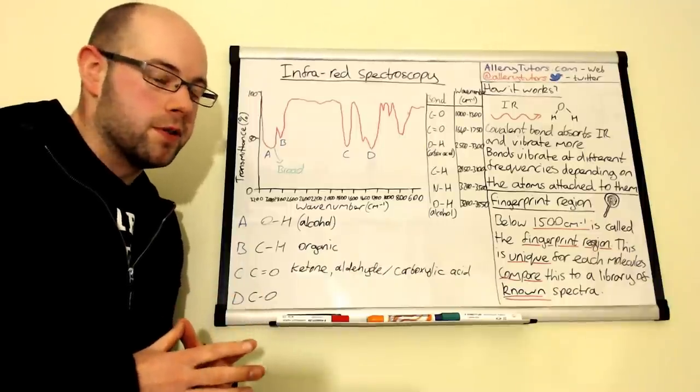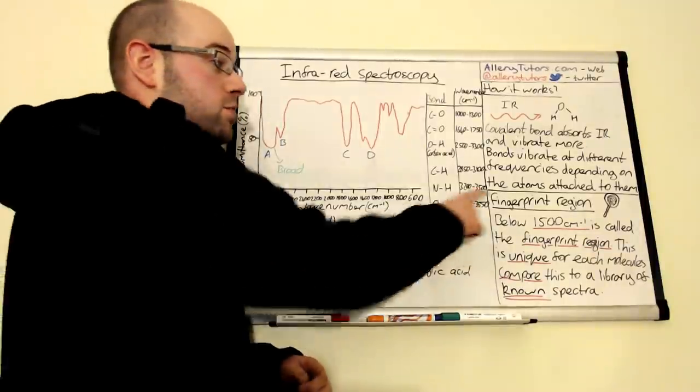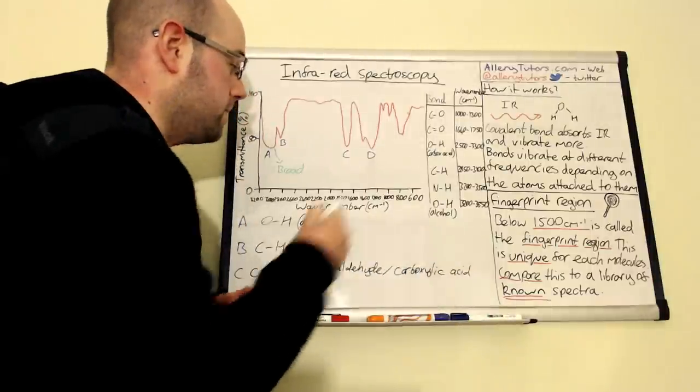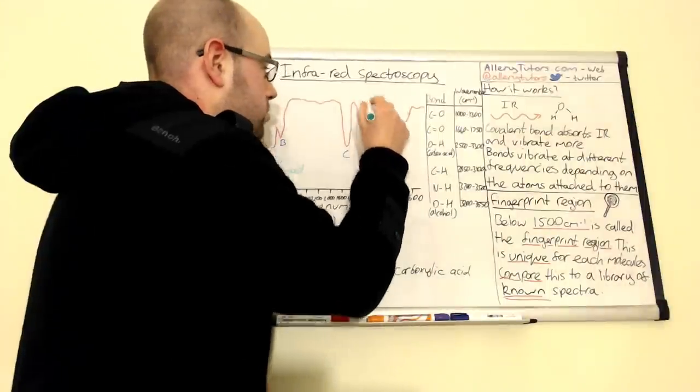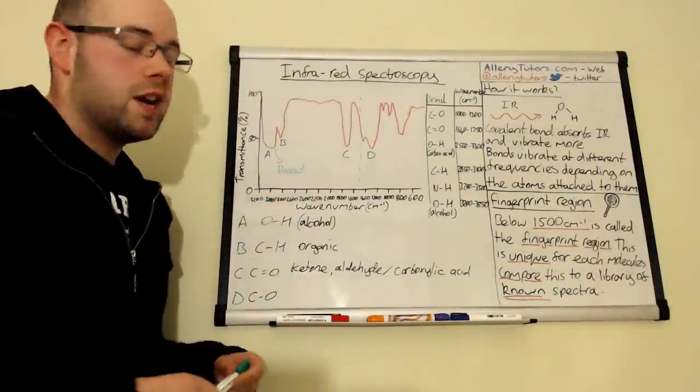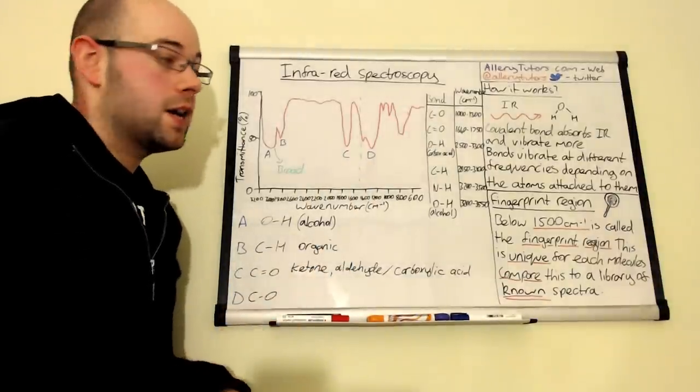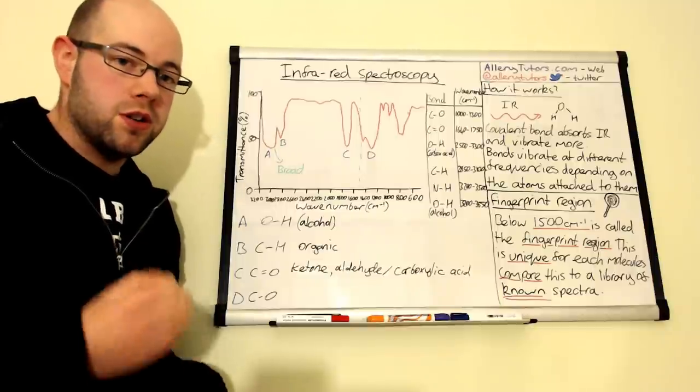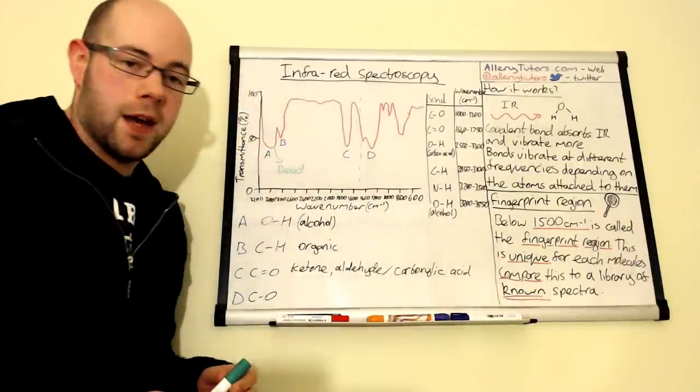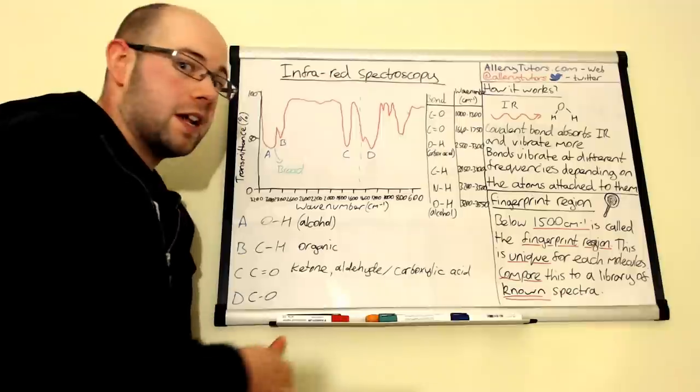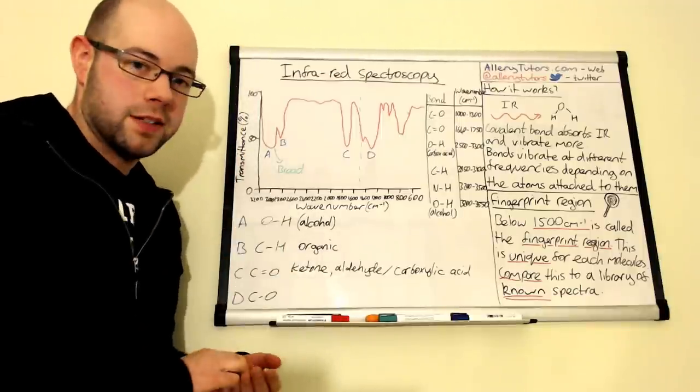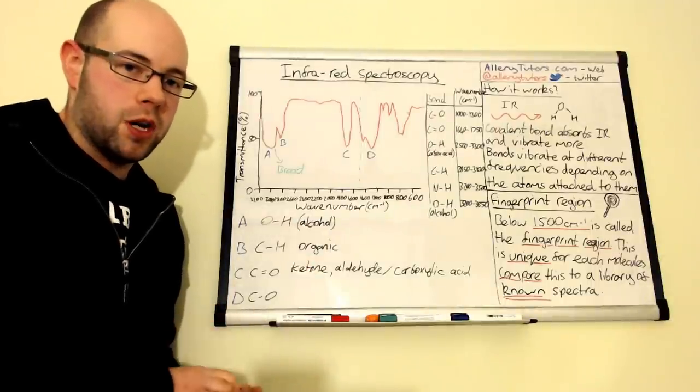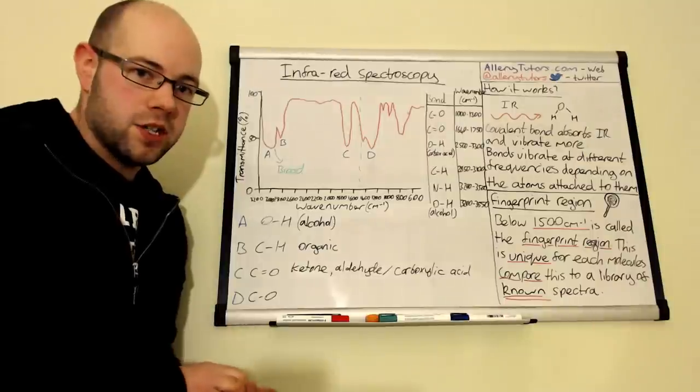But infrared obviously comes into its own really well with something called the fingerprint region, and anything below 1500, which I'll mark in green, so anything kind of below there is generally quite messy and we don't really need to interpret individual peaks here. We don't need to worry about that. But this is really powerful because actually the fingerprint region can be compared to a known spectra, and the reason why we can do that is because the fingerprint region is unique to each individual molecule. So every molecule has a very unique individual fingerprint region.